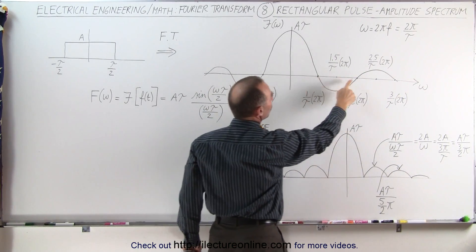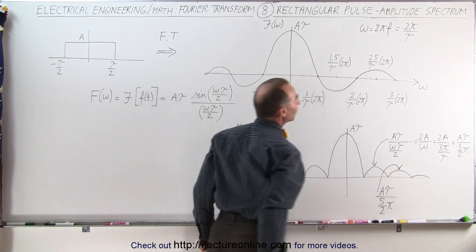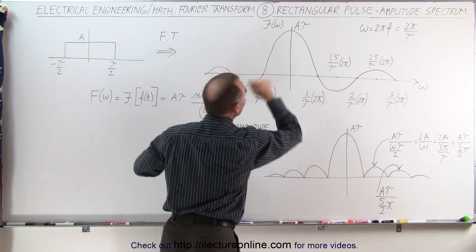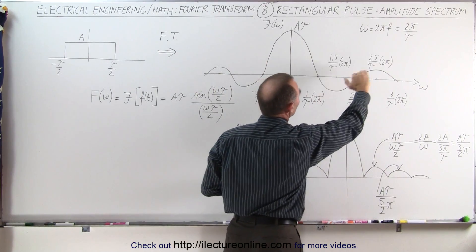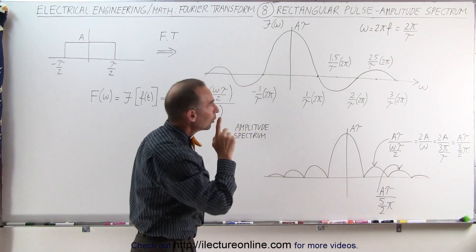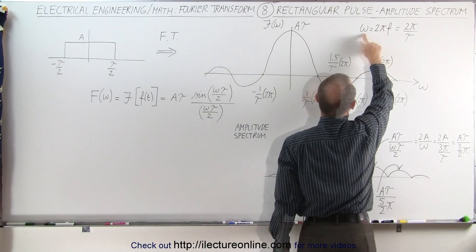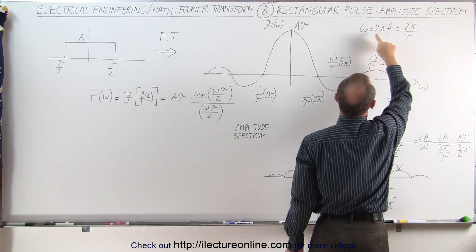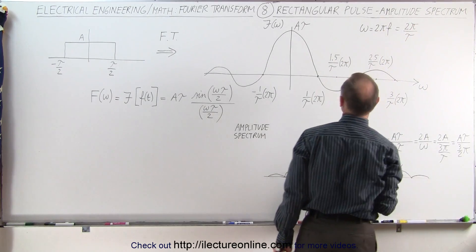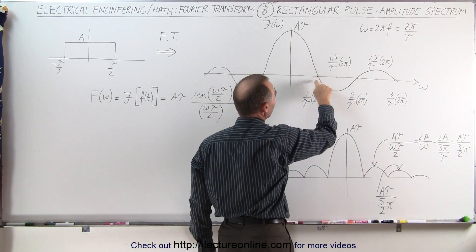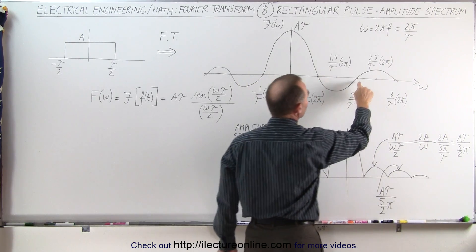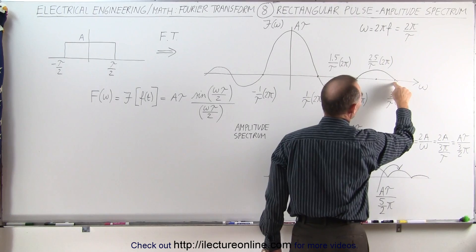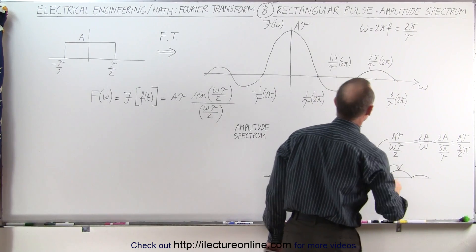The question is where does it cross the frequency axis. We're going from the time domain to the frequency domain, trying to understand this curve better. The angular frequency is equal to 2 pi f, and f is 1 over the period, so omega becomes 2 pi over the period. It crosses at 2 pi over the period, then at 2 times 2 pi over the period, then at 3 times 2 pi over the period, and so forth.